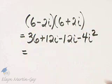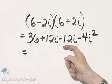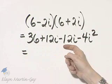Do we have any like terms? Yes, 12i minus 12i, that's 0i, or 0.